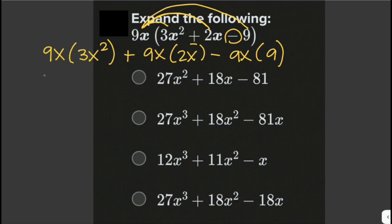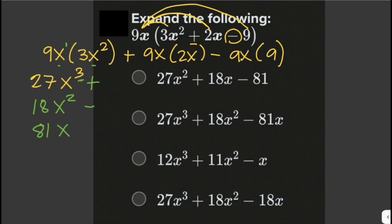9x times 3x squared is 27x cubed. When multiplying terms with the same base, we add the exponents per the law of exponents, so the exponent is 1 plus 2, which is 3. Then 9x times 2x gives us 18x squared, and 9x times 9 gives us 81x. So the answer is 27x cubed plus 18x squared minus 81x.